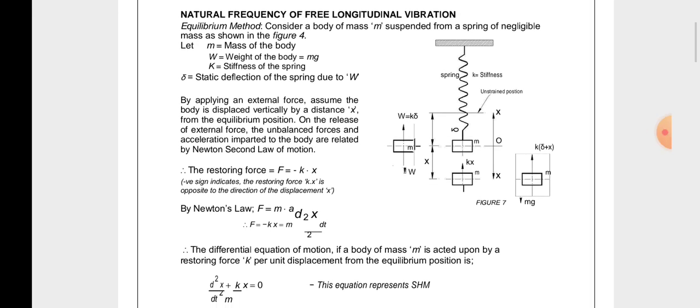Now we look at the natural frequency of free longitudinal vibrations by the equilibrium method. In this case, we have to see what kind of forces are acting and how to find out the natural frequency. The figure shows a spring-mass system, which consists of the following parameters.